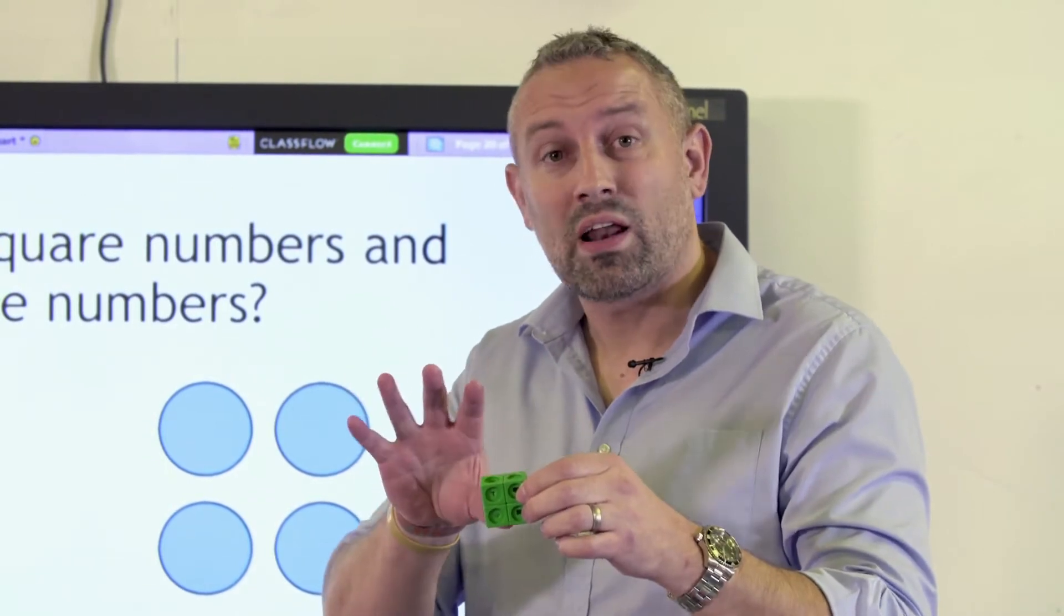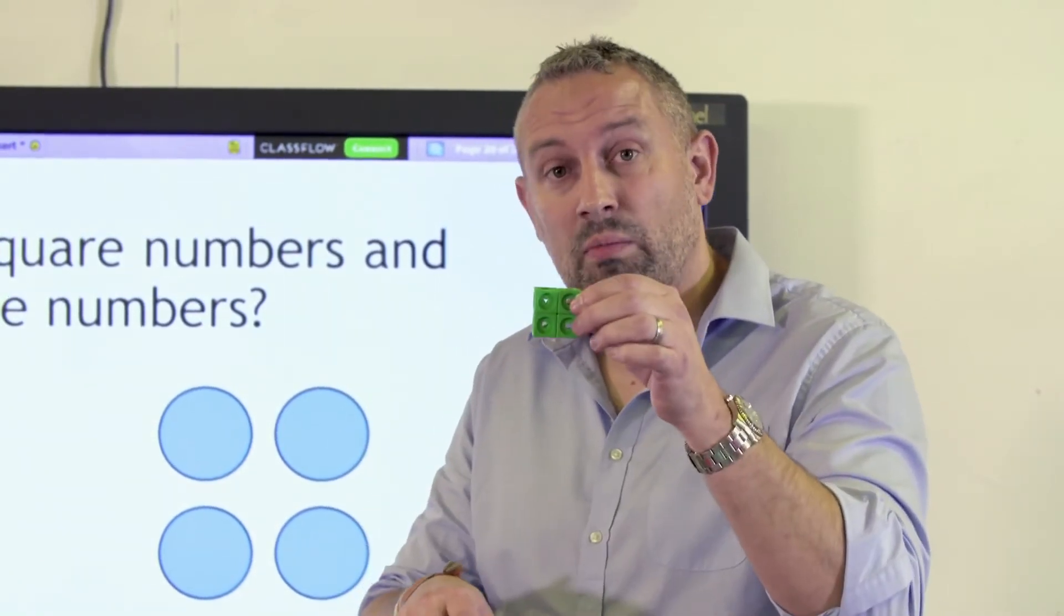I would then get the children to explore with 3 times 3 and 4 times 4 and so on, and see if they can realize what's happening. All the shapes that they make will be square numbers.